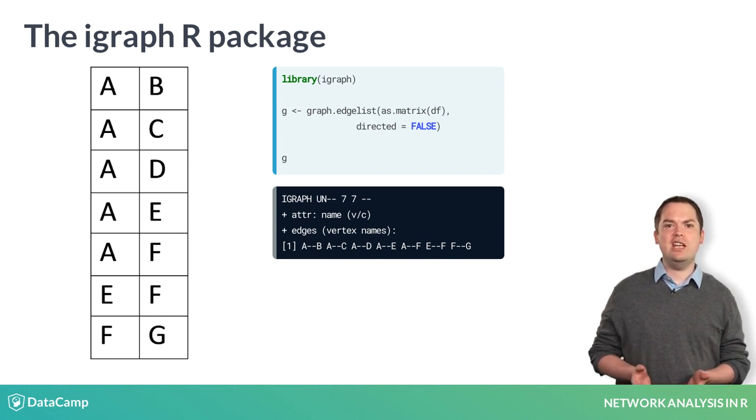When you inspect the graph object G, it provides several pieces of information. Of note are the two numbers on the first line. The first number indicates that there are seven vertices in the network. The second number indicates that there are seven edges. Also useful is the final row which shows all the edges in the network.